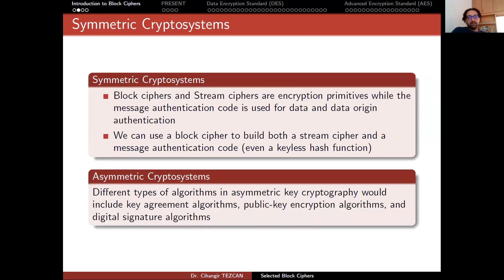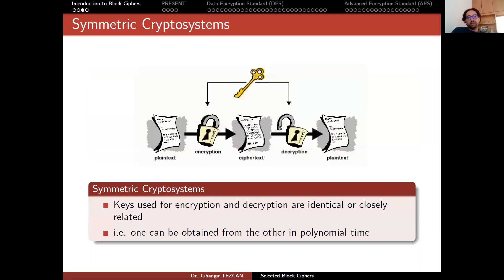Asymmetric key cryptosystems are somewhat different — they have different types of algorithms. For example, they include key agreement algorithms, so we will see different key exchange at the end of this course. We also have public key encryption algorithms like RSA, or digital signature algorithms. But we are in the symmetric cryptosystem now. The idea is: we have a secret key used for both encryption and decryption. These keys are identical or closely related — one can be obtained from the other in polynomial time. This won't be the case in asymmetric key cryptography because you won't be able to get the private key from the public key.